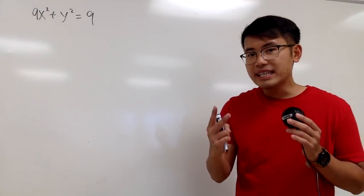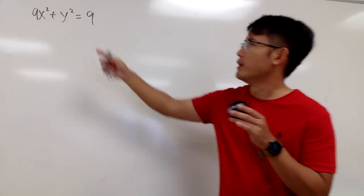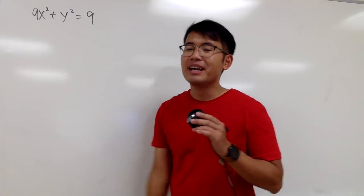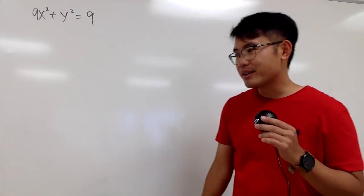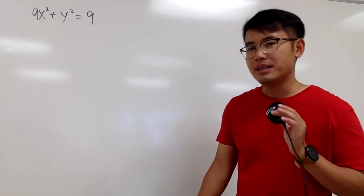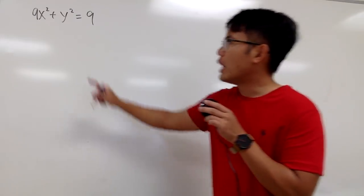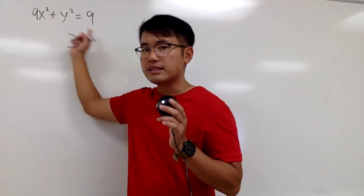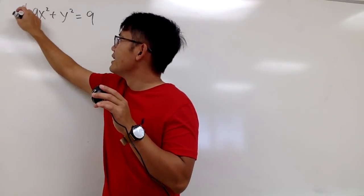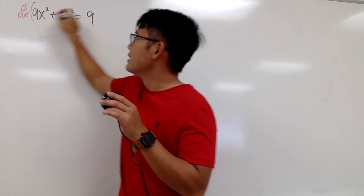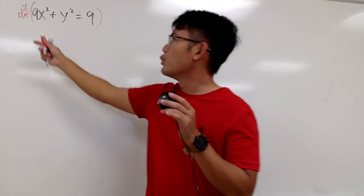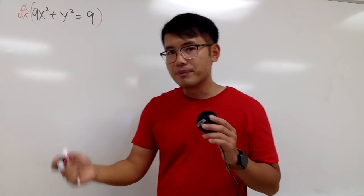We are going to find the second derivative of 9x squared plus y squared equals 9. We can isolate the y, but we can do this implicitly. I will look at this as it is and write down d/dx to mean that we will be differentiating with respect to x.